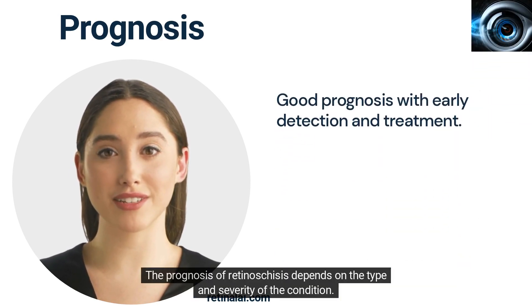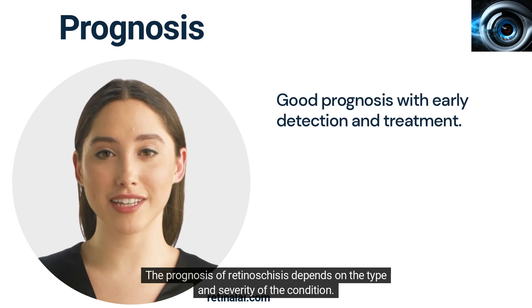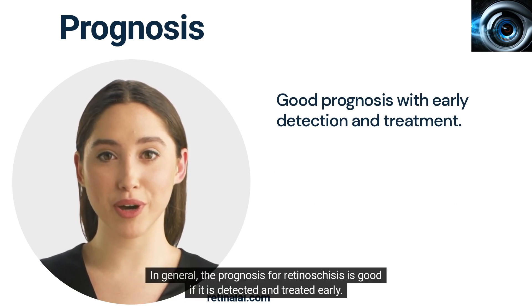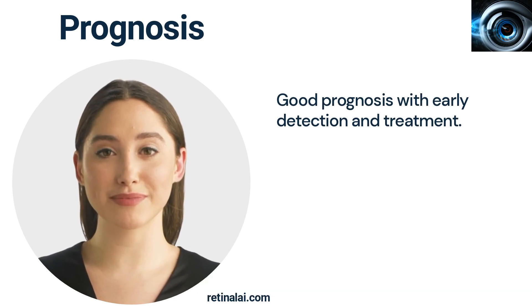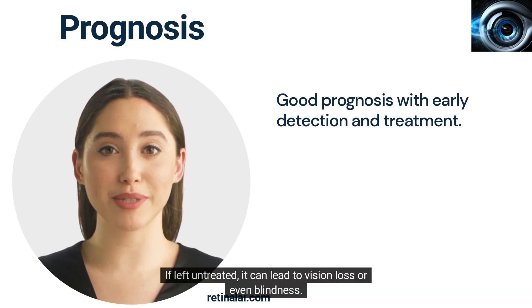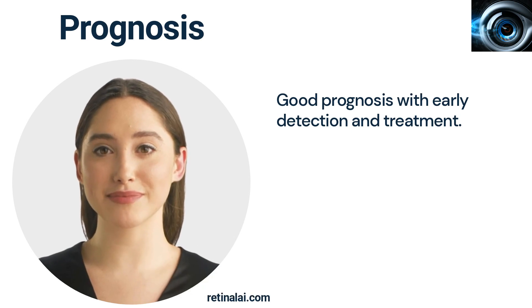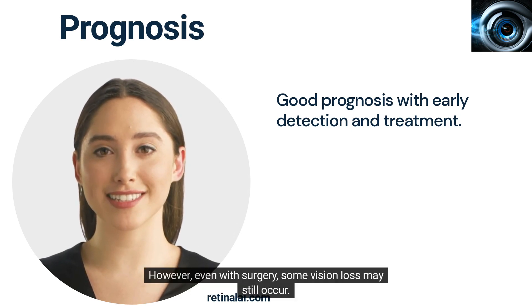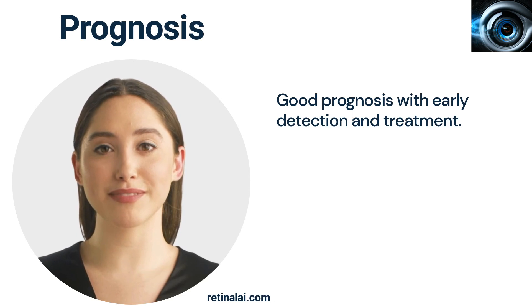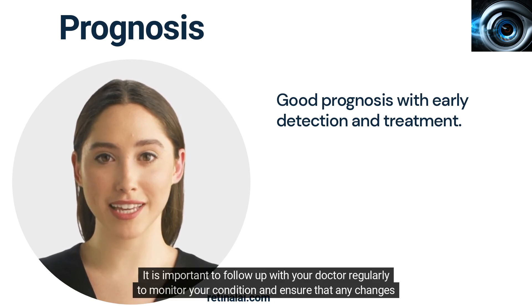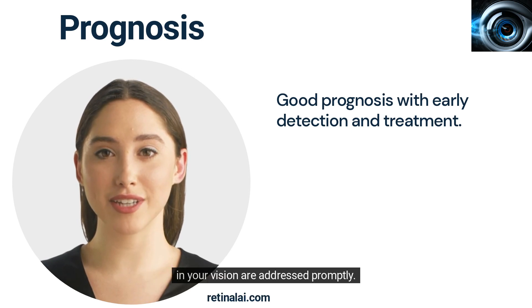The prognosis of Retinosteces depends on the type and severity of the condition. In general, the prognosis for Retinosteces is good if it is detected and treated early. If left untreated, it can lead to vision loss or even blindness. In some cases, surgery may be necessary to repair the retina and prevent further vision loss. However, even with surgery, some vision loss may still occur. It is important to follow up with your doctor regularly to monitor your condition and ensure that any changes in your vision are addressed promptly.